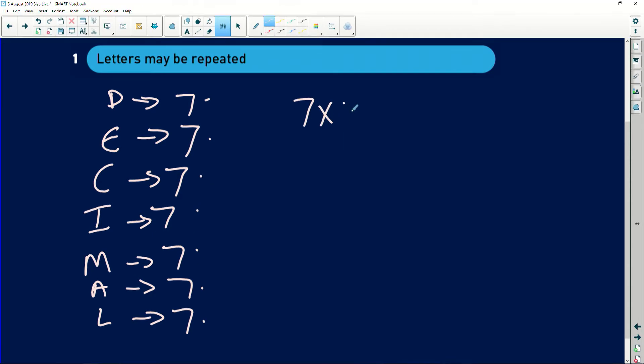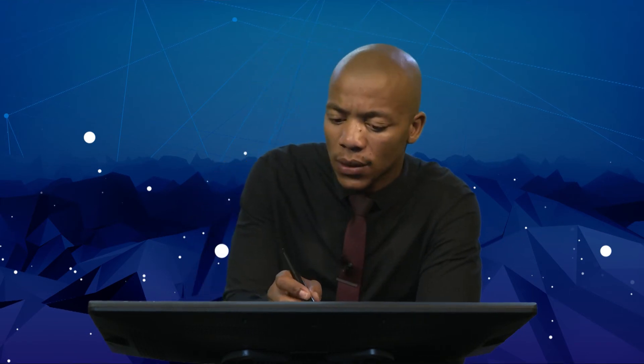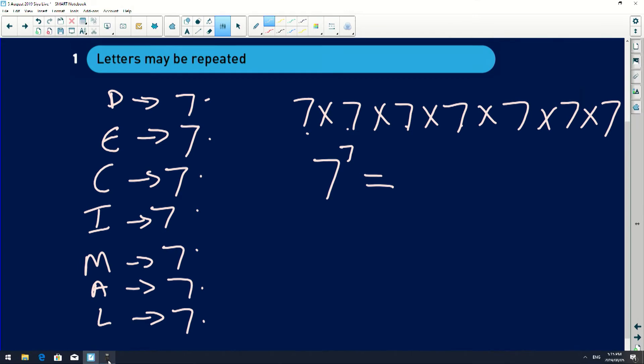So it will be seven multiplied by seven times seven times seven times seven times seven times seven. Now remember what I said when I started. When we're dealing with repeated, we normally use exponential. So here I was just trying to show you how we get to the exponential part. Since I have seven sevens that I'm multiplying by themselves, I will say this is the same as seven to the exponent of seven. And then I find what my answer is. So that will be how many arrangements or combinations I can have if my alphabets are repeated.